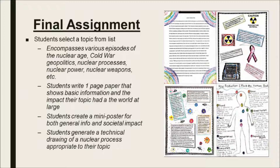The culminating assignment for the unit has each student pick a topic from a predetermined list — anything from nuclear weapons to nuclear power. They present their information in four different formats: a one-page write-up, a traditional paper, two posters that dynamically present general information and how the topic connects to society. That societal connection is where I want them to get the most out of the assignment — showing how scientific discoveries permeated through many aspects of life in the second half of the 20th century. Finally, students create a drawing or schematic appropriate to their topic, ranging from a fission reaction to how radiation affects the human body. These are hung in the hallway and the kids are often quite proud of their work.